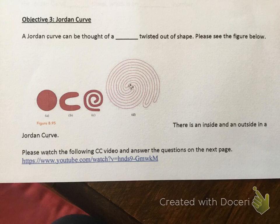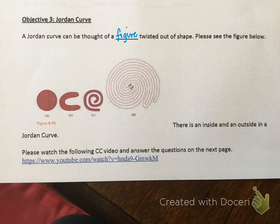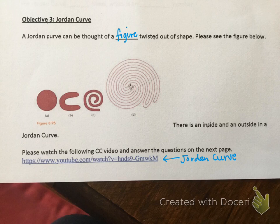Next we're going to talk about Jordan curves. A Jordan curve can be thought of as a figure twisted out of shape. Starting with a circle, if I twist it I get form B — a sideways U — then C, the beginning of a spiral, and then more twisting gives figure D. There is an inside and an outside in a Jordan curve. Pause me now and watch the video on the Jordan curve, which explains how to figure out if a point is inside or outside a complex figure.